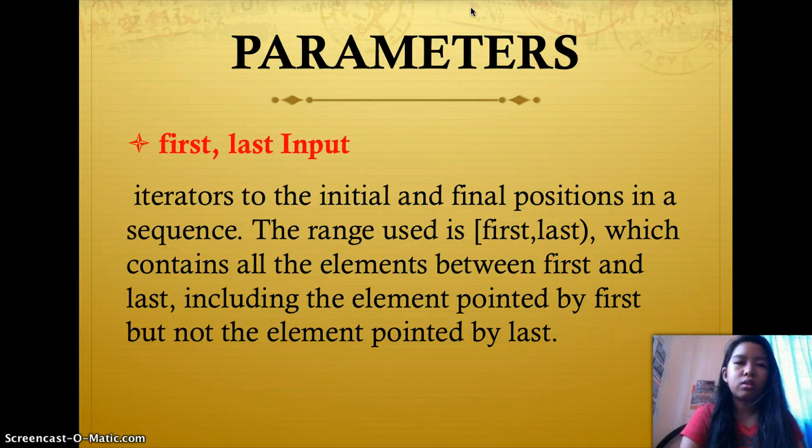The parameters used are first, last input iterators to the initial and final positions in a sequence. The range used is [first, last], which contains all the elements between first and last, including the element pointed by first, but not the element pointed by last.